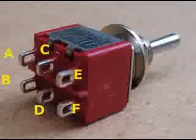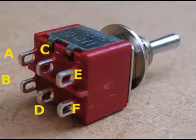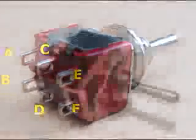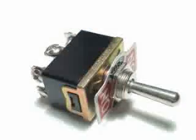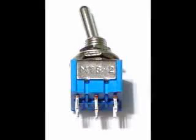Another common configuration for toggle switches is the double pole double throw, or DPDT switch. A double pole double throw toggle switch has six terminals.